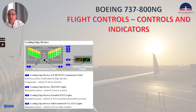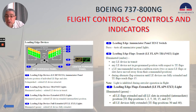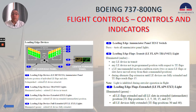We have the leading edge devices. Number 1, the leading edge devices annunciator panel — located in the aft overhead panel — indicates position of individual leading edge flaps and slats. We can see leading edge flaps 1 through 4, and slats 1 through 8. Extinguished means the related leading edge device is retracted.